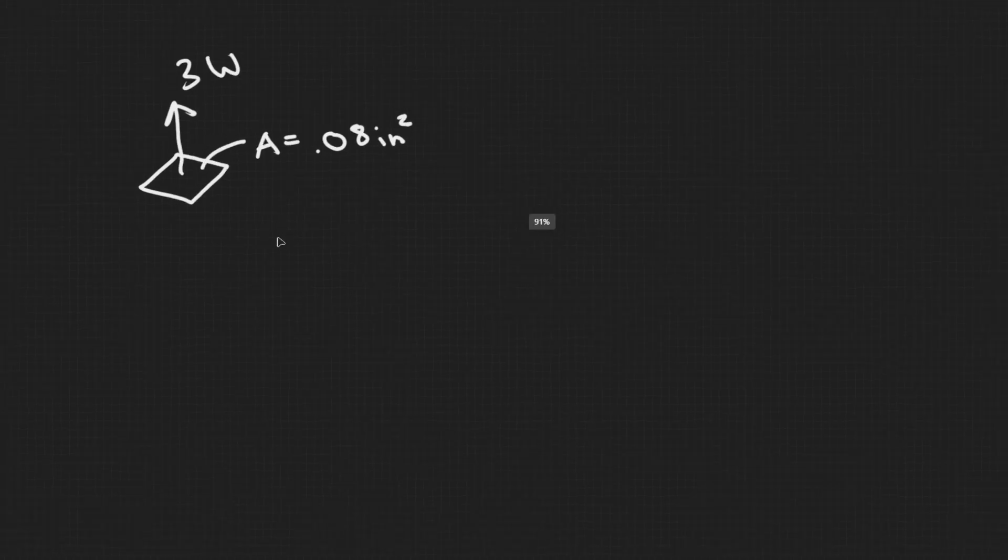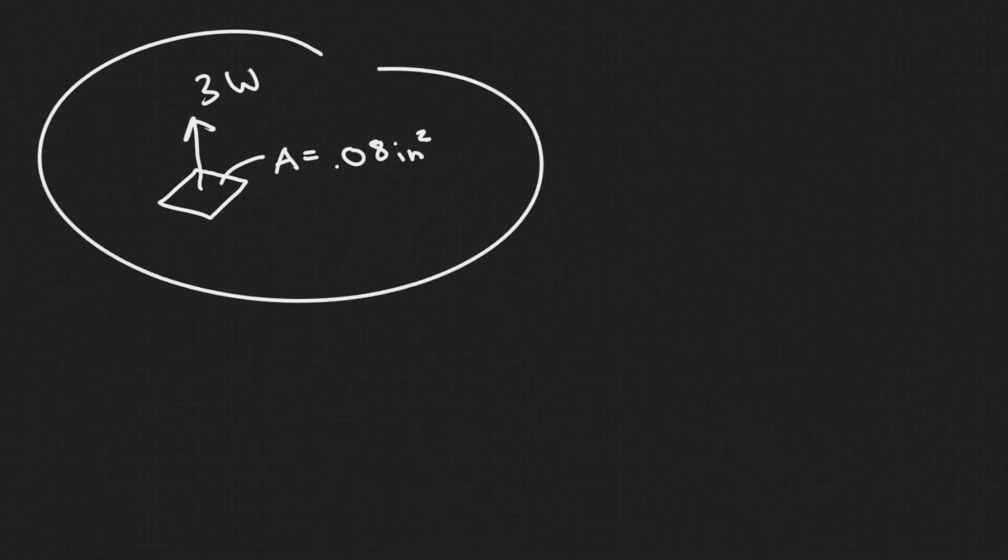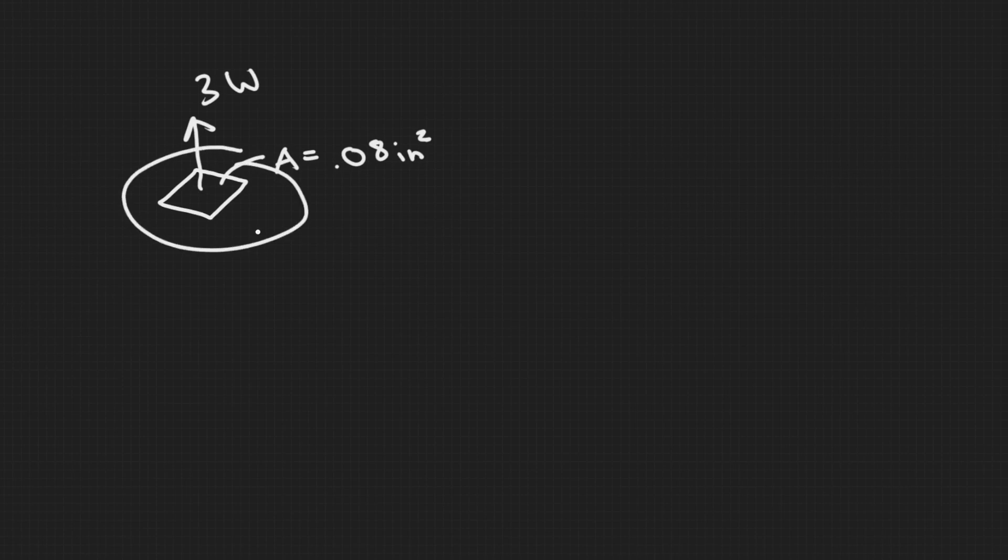The first thing you always want to do is draw what's going on. So imagine right here we have this logic chip, and we know its surface area, or the area that is going to be dissipating the heat, is 0.08 square inches. And we know that it's going to be dissipating 3 watts of power.